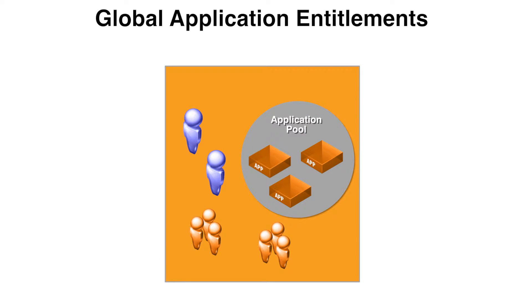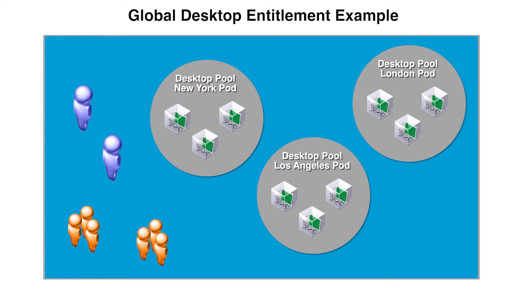A global application entitlement contains users and groups that share the global entitlement and application pools that can provide applications for the entitled users. A single global entitlement can contain resources from across the pod federation.